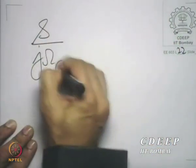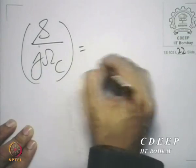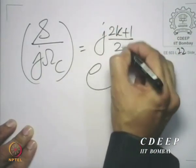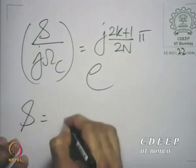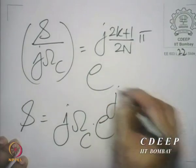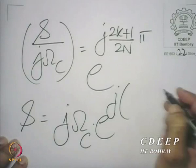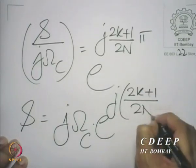We write −1 in this form to identify all 2n distinct roots. Solving, s_k / (j·omega_c) = e^(j·(2k+1)·π / (2n)), so s_k = j·omega_c · e^(j·(2k+1)·π / (2n)). In polar form, the angle is (2k+1)·π/(2n) plus π/2 — the π/2 comes from the factor j. Therefore all s_k have magnitude omega_c.